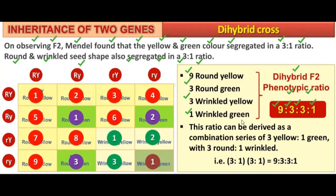This ratio can be derived as a combination of a series: 3 yellow, 1 green and 3 round, 1 wrinkled. If we multiply 3:1 into 3:1, we get a ratio of 9:3:3:1. So that was all about the dihybrid cross, which represents Mendel's study of the inheritance of 2 genes.